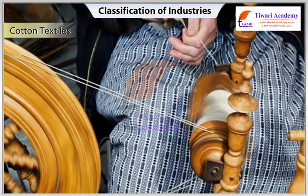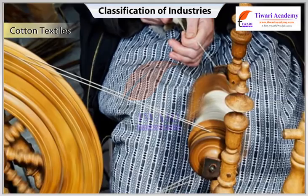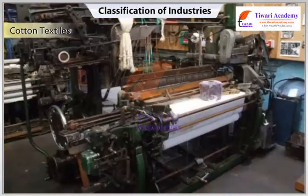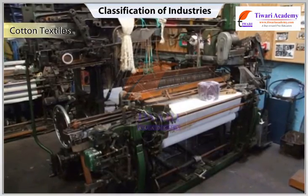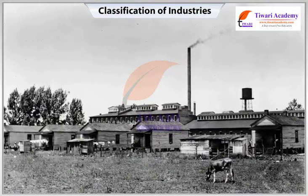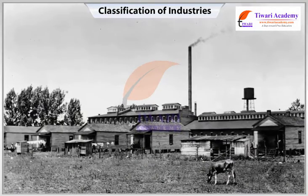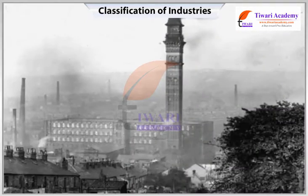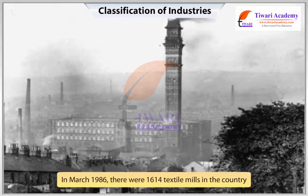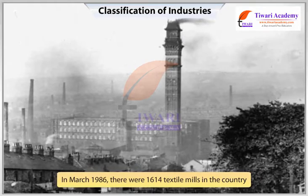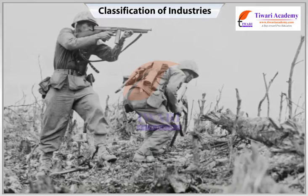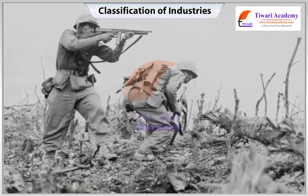In ancient India, cotton textiles were produced with hand spinning and hand loom weaving techniques. After the 18th century, power looms came into use. The first cotton textile mill was set up in Bombay in 1854, exclusively out of Indian capital. Since then there has been steady growth; by March 1986, there were 1,614 textile mills in the country. Demand for cloth in the UK during the World Wars gave a boost to the development of the cotton textile industry.